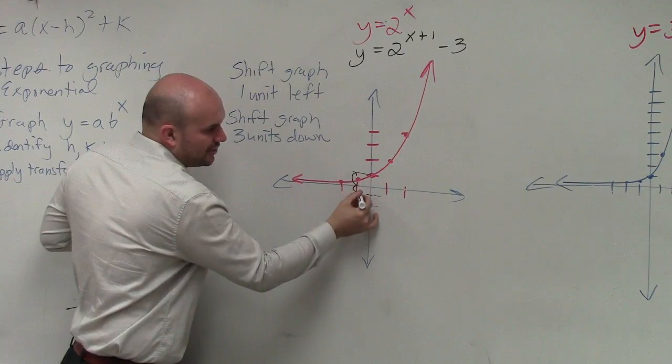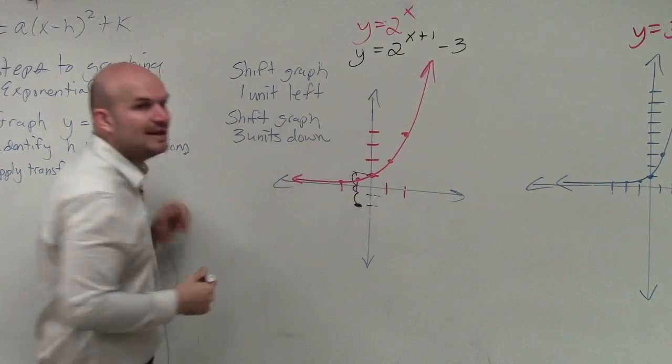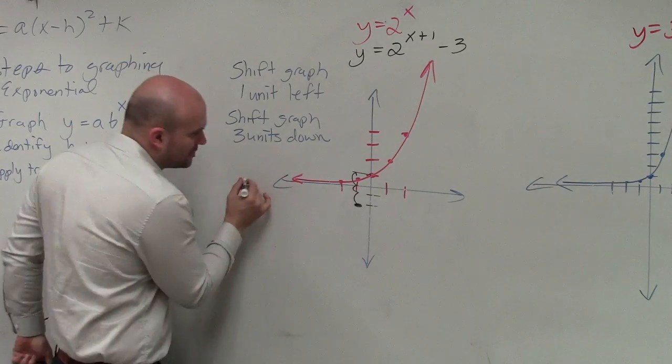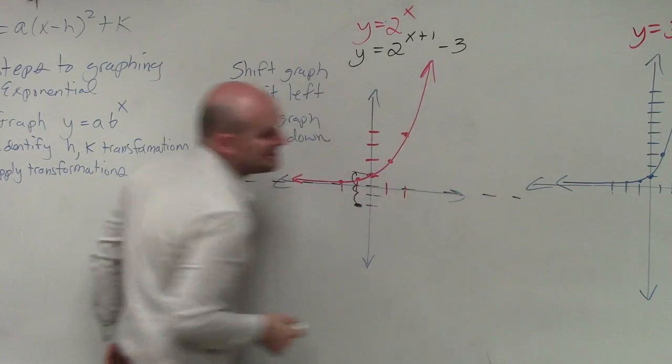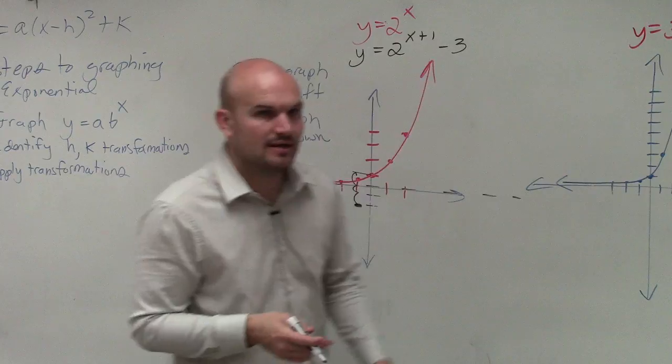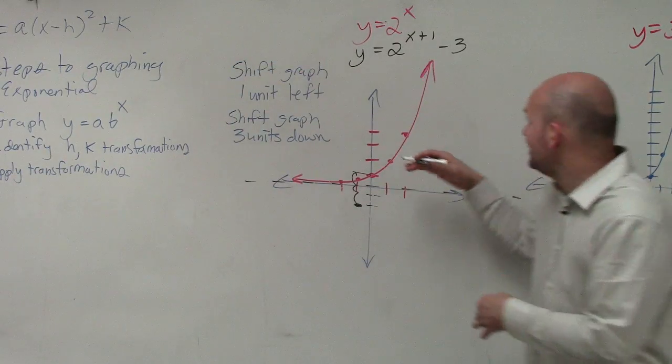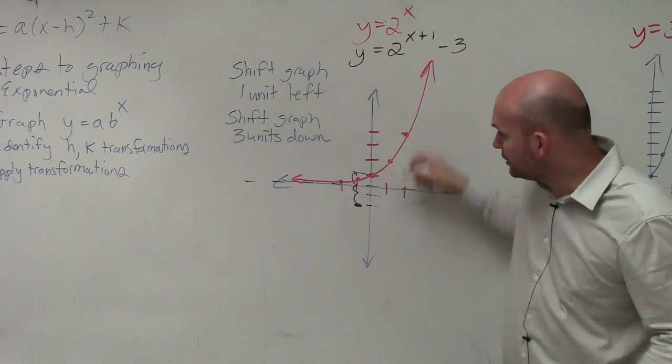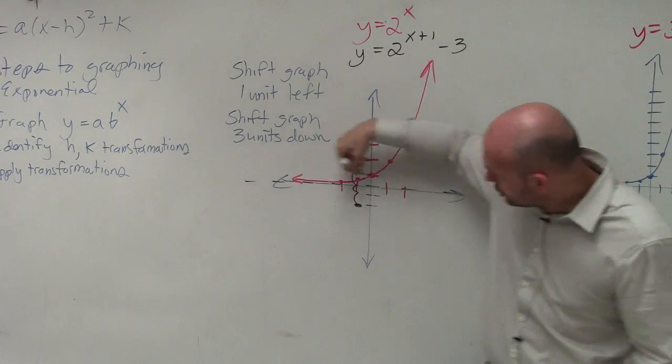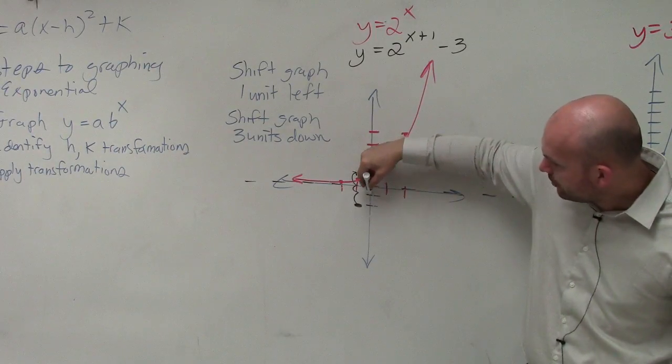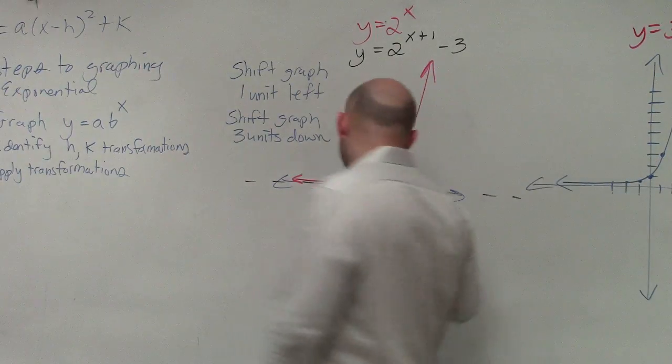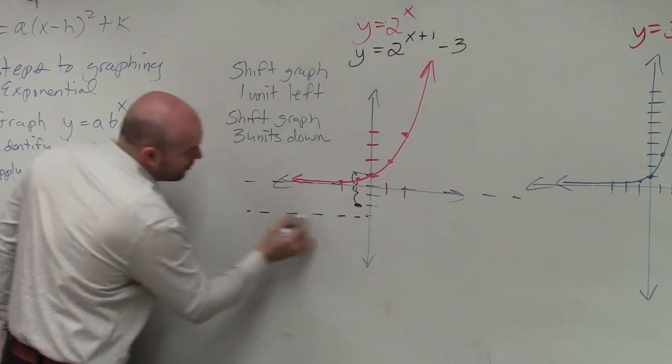One, two, three. Now, the other thing I mentioned is that we have a horizontal asymptote. The horizontal asymptote is at y equals zero. So that horizontal asymptote is also being shifted down three units. So I take this horizontal asymptote at zero, and I go down one, two, three. So now I create this horizontal asymptote.